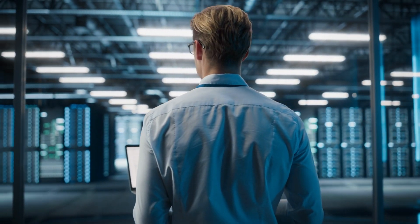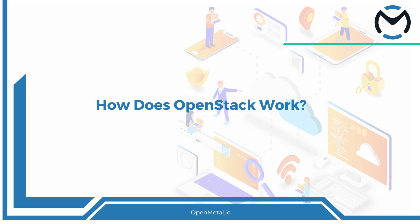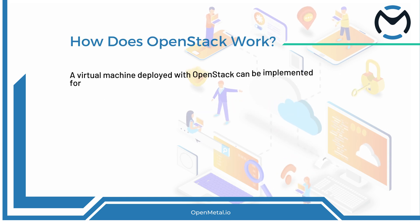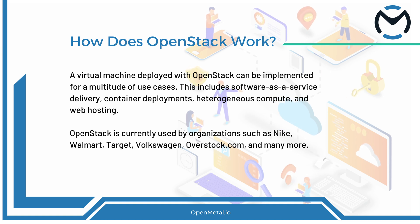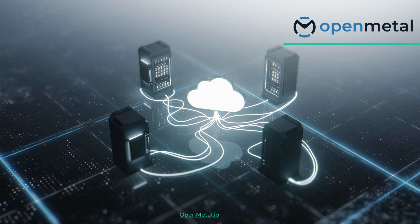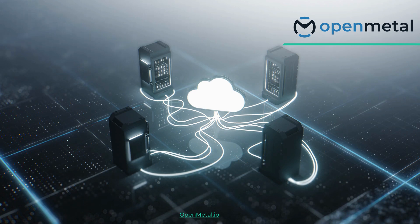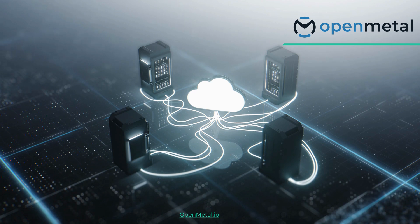But how does OpenStack actually work? OpenStack is a platform composed of several independent components that interoperate through application programming interfaces, or APIs. These components are complementary, allowing you to build your cloud with only the ones you need. Unlike public clouds, OpenStack gives you root-level configuration access, ensuring maximum flexibility.